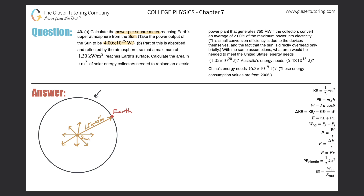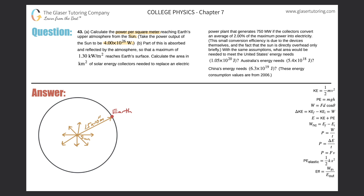So here we have a picture — in the center is the sun, and the sun is emitting a certain power. Now this is a two-dimensional picture that I have drawn here, but you have to think about it in three dimensions. So this really is not a circle, but it's a sphere — just keep that in mind.